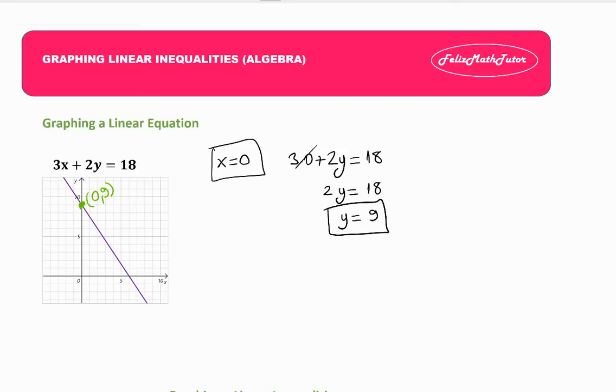I need one more point to graph my linear equation. So I'm using y equals 0 for finding the x-intercept. So 3x plus 2 multiplied by 0 equals 18.